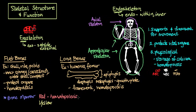You can typically find red bone marrow within flat bones and in the epiphyses of long bones.